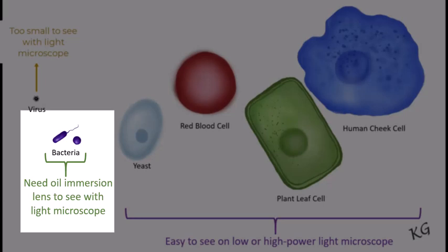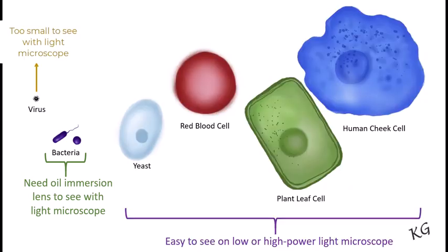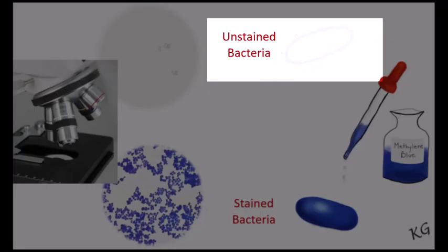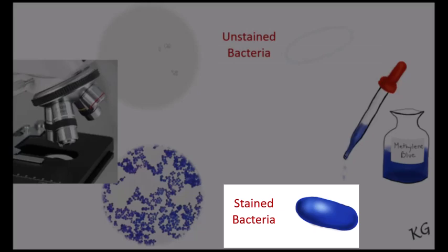We're going to use oil immersion lens to get a magnification of a thousand times, and they'll still seem pretty small. The other thing about bacterial cells is that they're generally transparent, so you'll need to stain them before you can view them.